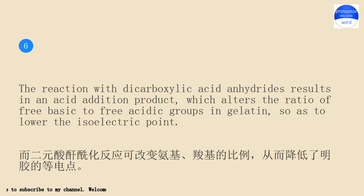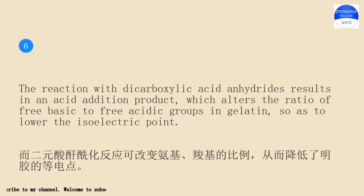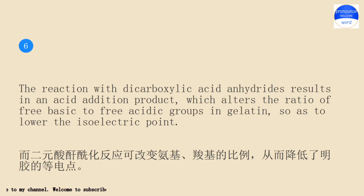The reaction with dicarboxylic acid anhydrides results in an acid addition product, which alters the ratio of free basic to free acidic groups in gelatin, so as to lower the isoelectric point.